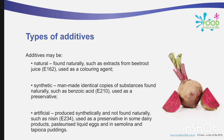Additives may be natural — found naturally — such as extract from beetroot juice E162 used as a coloring agent. Second, synthetic — a manmade identical copy of substances found naturally — such as benzoic acid E210 used as a preservative. Third, artificial — produced synthetically and not found naturally — such as nisin E234, used as a preservative in some dairy products, pasteurized liquid eggs, and in semolina and tapioca pudding.